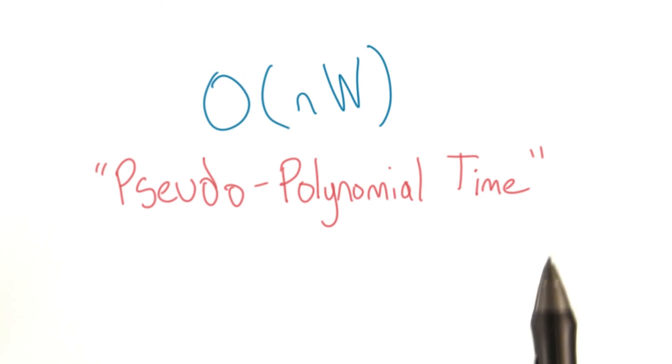This is a pseudo-polynomial time solution. A true polynomial runtime wouldn't have a variable besides n. I reiterate, polynomial time algorithms are much faster than exponential time algorithms for big numbers, so the solution here is generally faster.